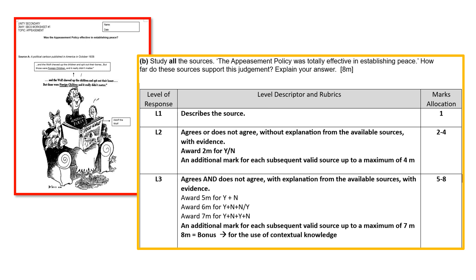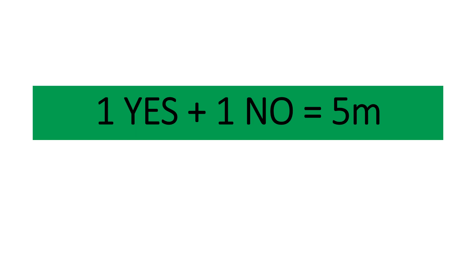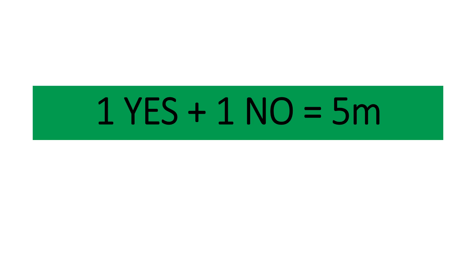It is eight marks as you can see. When there is a statement — for example 'The appeasement policy was totally effective in establishing peace' — the keyword is 'study all sources.' You will have five sources; you don't have to use all five. One yes and one no source will already get you five marks. Two yeses and two nos will already get you seven marks. I'll talk to you about the bonus when we are in class.